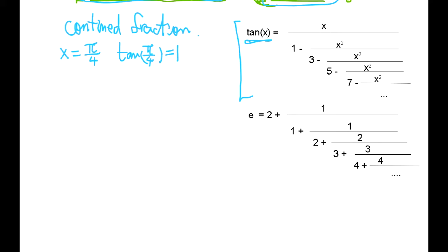Suppose pi is rational. Assume pi is rational. Then you put pi over 4, a rational number, on this continued fraction. And if you look at this, it's going to be a random decimal number. It's not a cyclic decimal number. So we have a contradiction. Pi cannot be a rational number. Pi has to be an irrational number.